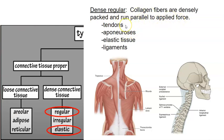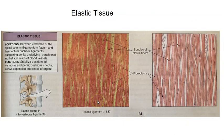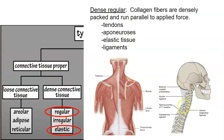Examples of dense regular connective tissue include tendons, which connect muscle to bone; aponeuroses, which are like flat, broad tendons that still connect muscle to bone; and ligaments, which attach bone to bone. Elastic tissue is also seen here — in places like the interspinous ligament, elastic fibers are more abundant than collagen fibers and the parallel fibers are visible.